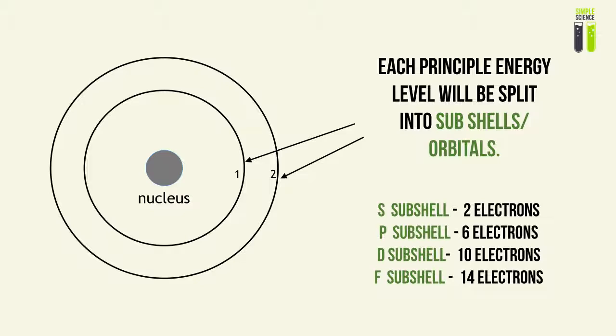Each principal energy level is split into different regions called subshells or orbitals. There are four different types: the S subshell, the P subshell, the D subshell, and the F subshell. The S subshell can contain a maximum of 2 electrons, P subshell 6 electrons max, D subshell 10 electrons max, and F subshell 14 electrons max. These are something you have to remember.